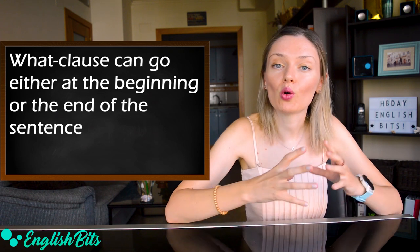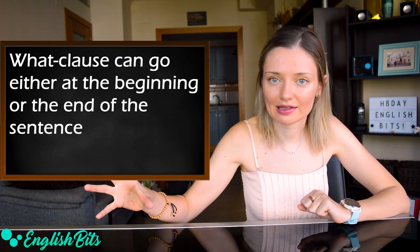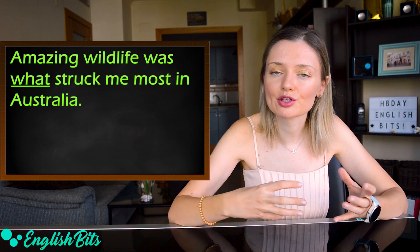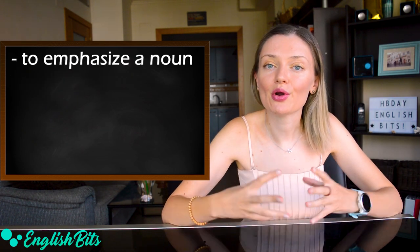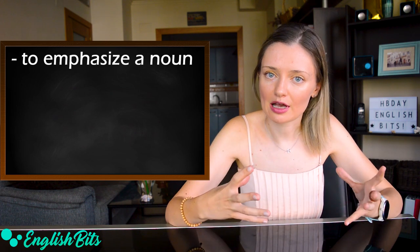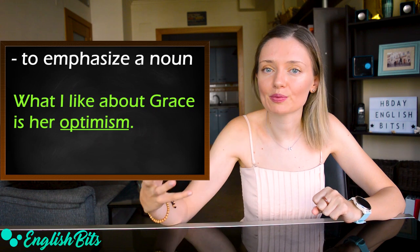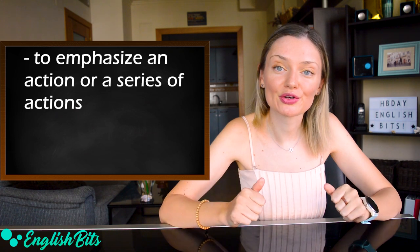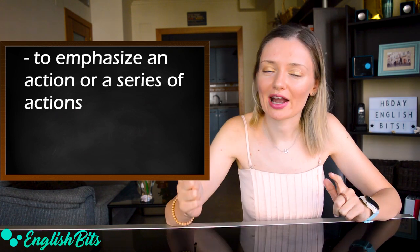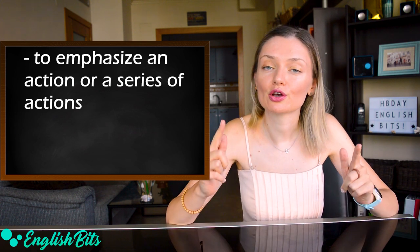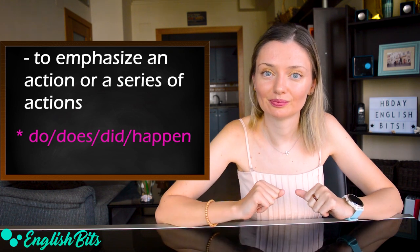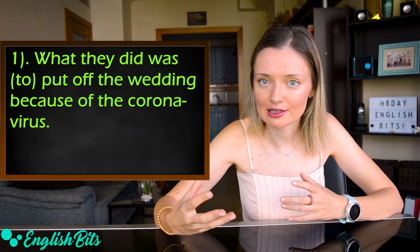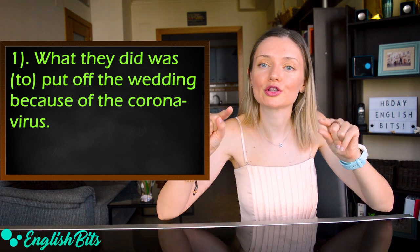The what-clause can go either at the beginning or at the end of the sentence. For example: 'Amazing wildlife was what struck me most in Australia.' We can use this structure to emphasize a noun. For example: 'What I like about Grace is her optimism' — we want to emphasize 'optimism.' We can also use it to emphasize an action or a series of actions, and we usually use 'do,' 'does,' 'did,' or 'happen.' For example: 'What they did was to put off the wedding because of the coronavirus.' In this case, 'to' is optional.